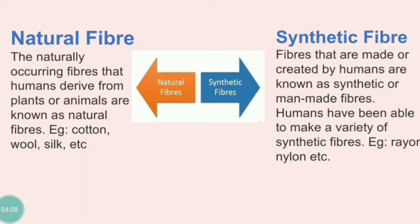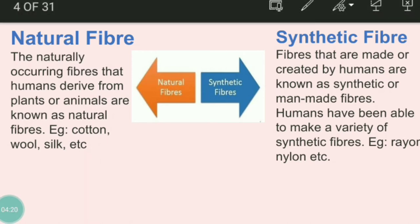What are natural fibers? The naturally occurring fibers that humans derive from plants or animals are called natural fibers. For example, cotton, silk, and wool, which you have already studied in your previous session.